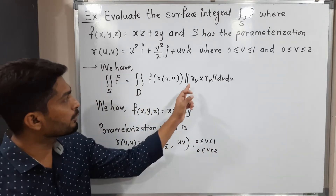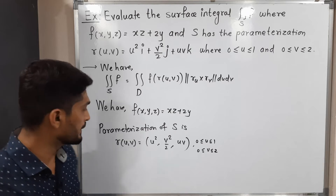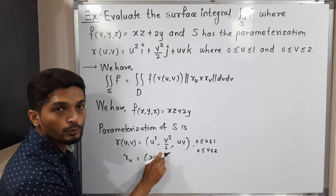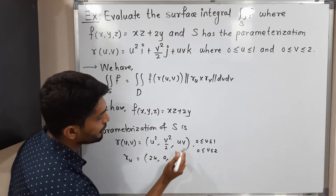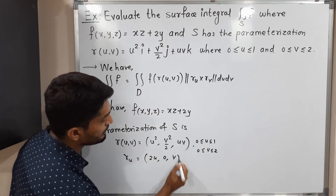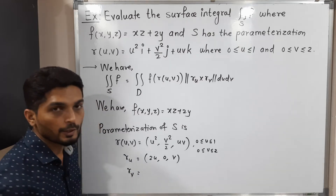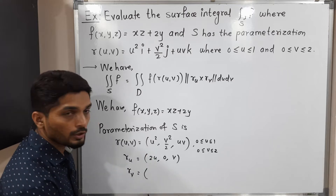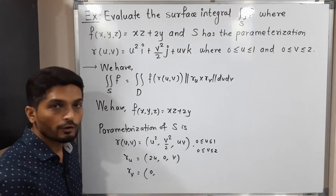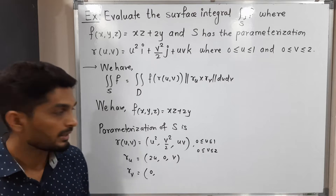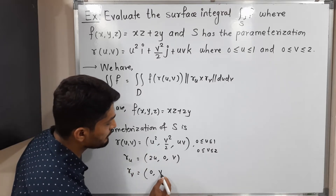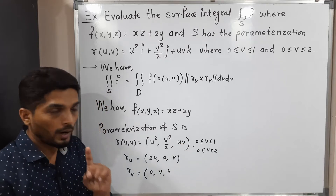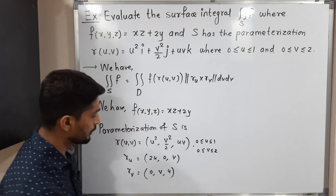We want to find r_u, the derivative of r with respect to u: derivative of u² is 2u, there is no u in v²/2 so it's 0, and derivative of uv with respect to u is v, giving r_u = (2u, 0, v). Then r_v: no v in u² so 0, derivative of v²/2 is v, and derivative of uv with respect to v is u, giving r_v = (0, v, u).